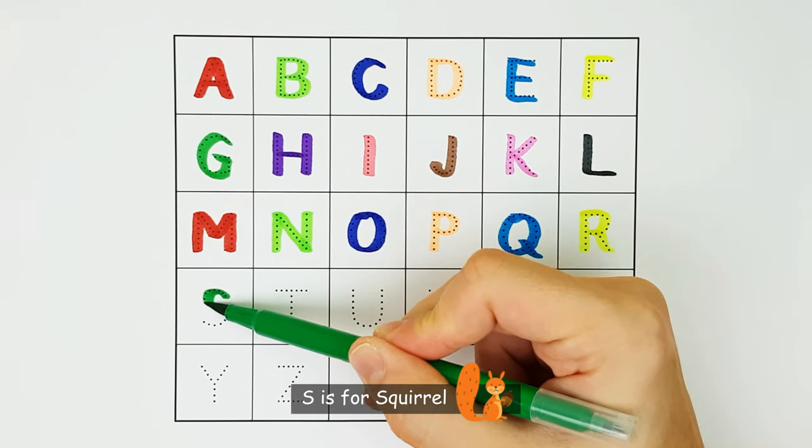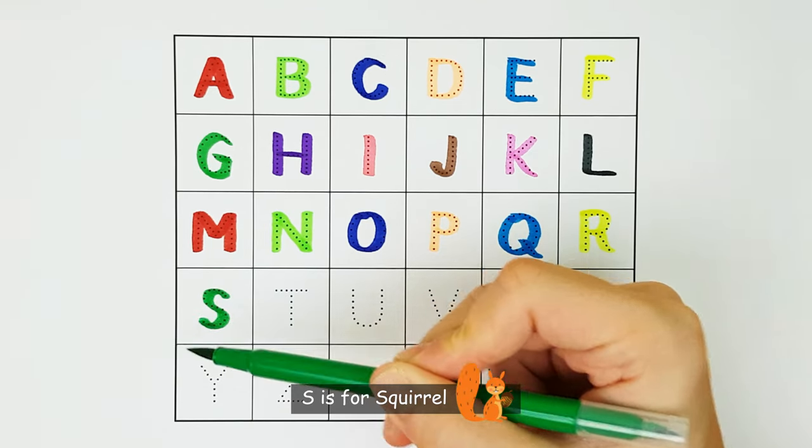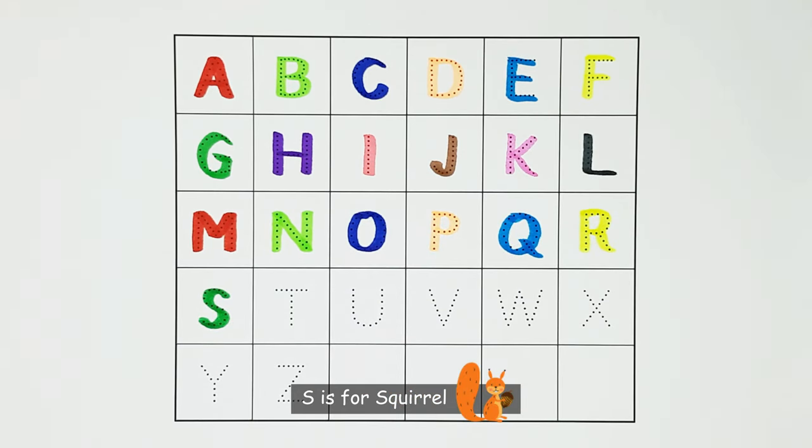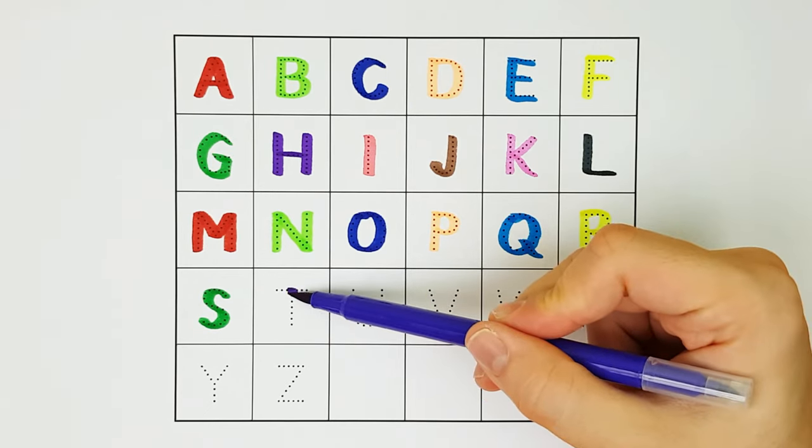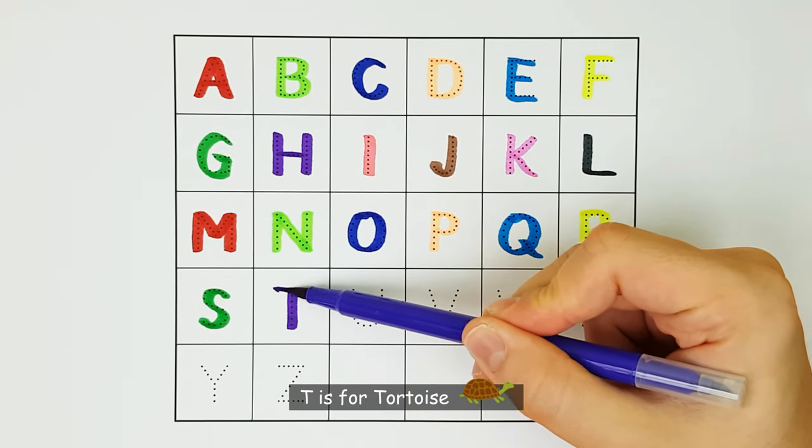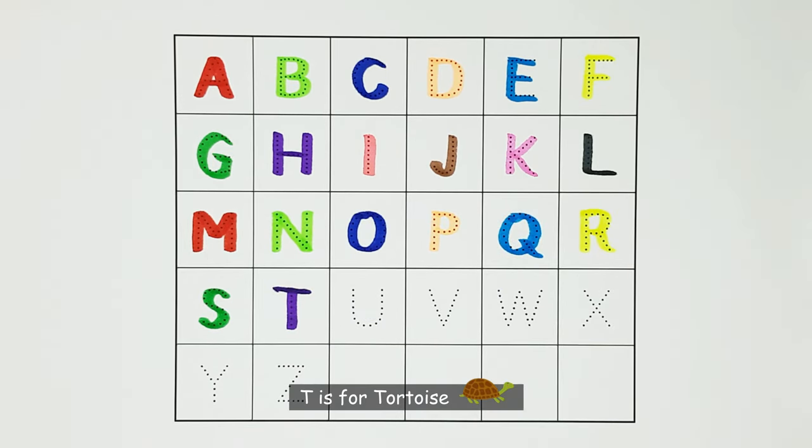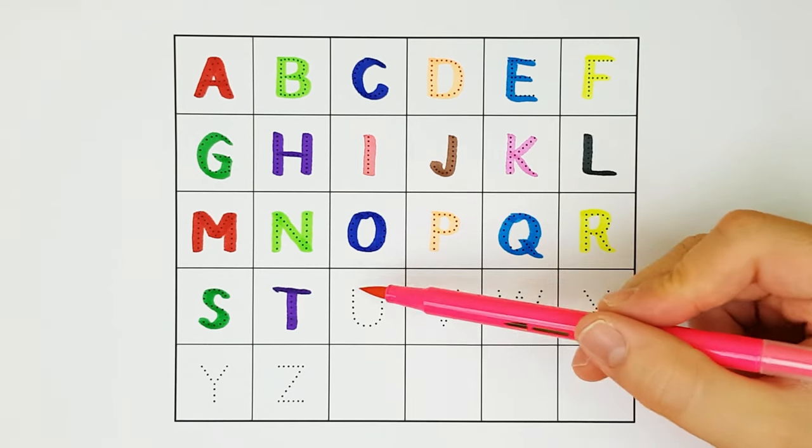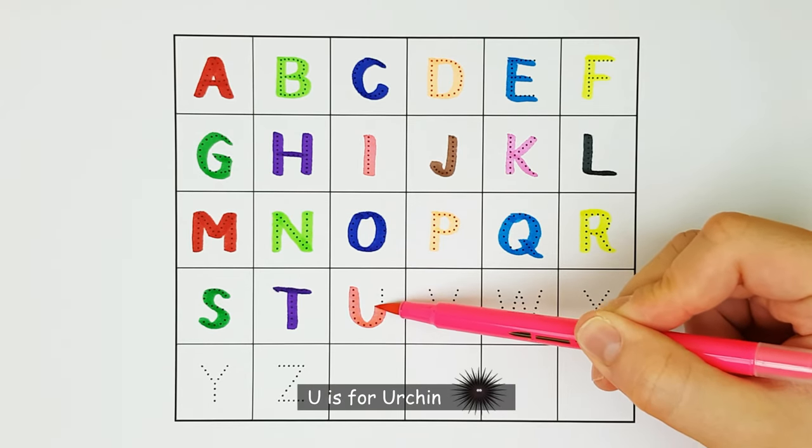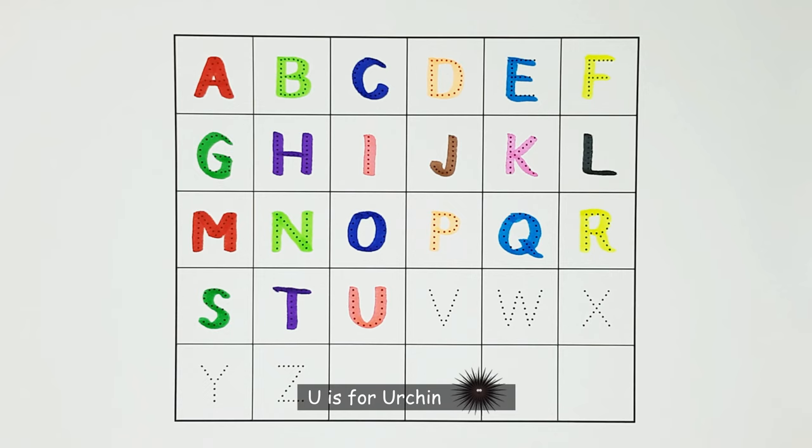S. S is for Squirrel. S. T. T is for Tortoise. T. U. U is for Urchin. U.